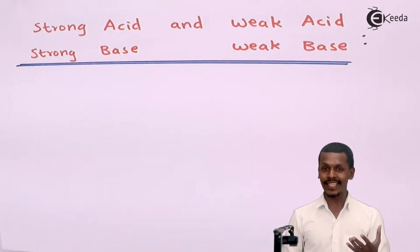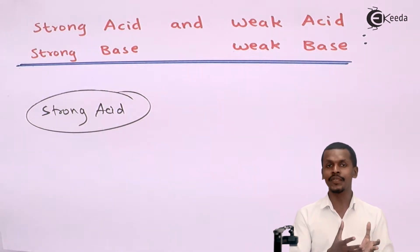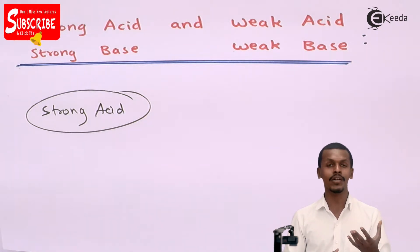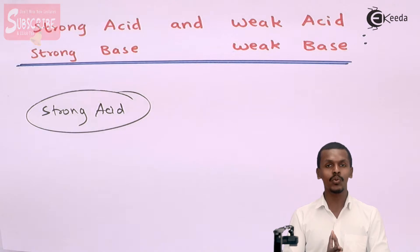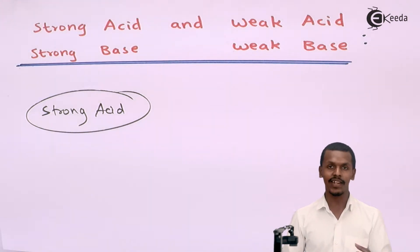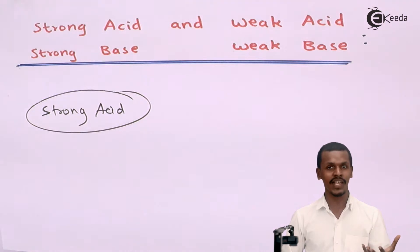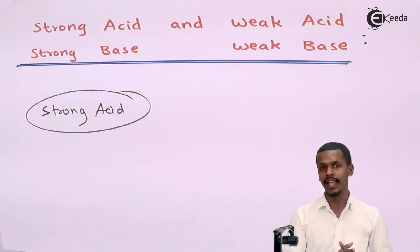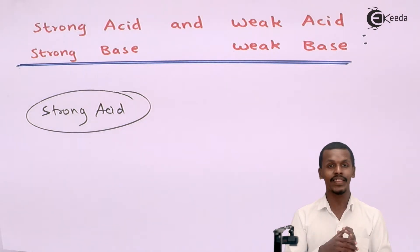Talking about strong acid first — it is very similar to what we did in the classification of electrolytes. Strong electrolytes are those which dissociate completely when dissolved in water. Similarly, strong acids are those acids which dissociate completely when dissolved in water.